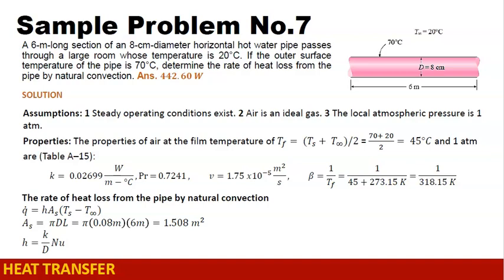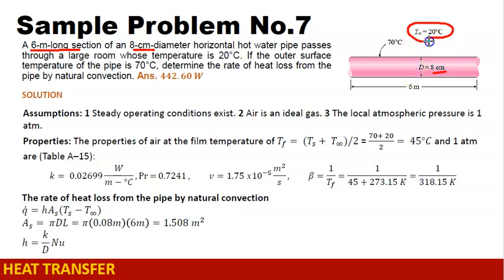Natural convection sample problem number 7. We are given a cylindrical pipe which is 6 meters long and the diameter of the pipe is 8 cm. Hot water passes through the pipe through a large room whose temperature is 20 degrees Celsius. If the outer surface temperature of the pipe is 70 degrees Celsius, determine the rate of heat loss from the pipe by natural convection.